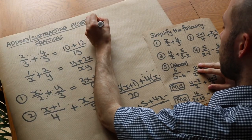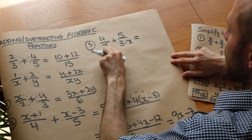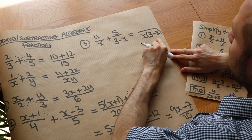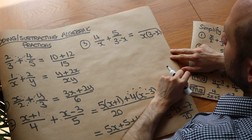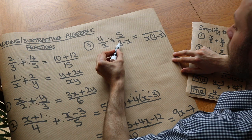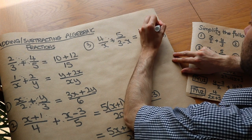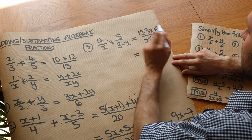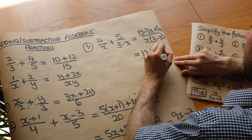Question 3: we've got 4 over x plus 5 over (3−x). Again, let's multiply the denominators, so we've got x times (3−x). It doesn't matter whether you leave it factorised or expand — neither is considered simpler. But we still need to cross multiply the numerators. So 4 times (3−x) — doing that in my head — gives 12 minus 3x. And then plus 5 times x, which is plus 5x. That gives us 12 plus 2x, all over x(3−x). We can leave our answer like that.